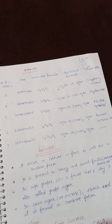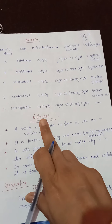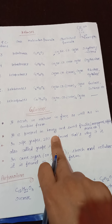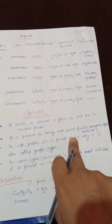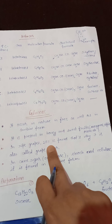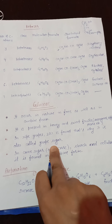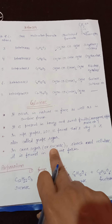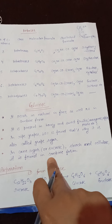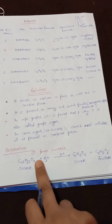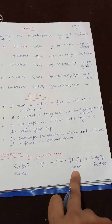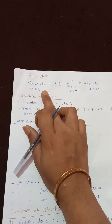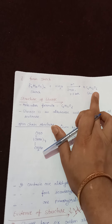Glucose occurs in nature in both free and combined forms. It is also called grape sugar. In combined form, it is present in cane sugar (sucrose), starch, and cellulose. Preparation: hydrolysis of sucrose gives one glucose and one fructose unit; hydrolysis of starch gives n units of glucose. Structure of glucose: molecular formula C₆H₁₂O₆; it is an aldohexose and is also known as dextrose.